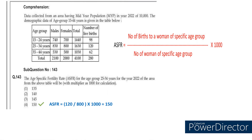Coming to the third question, they are asking us to calculate the ASFR, age-specific fertility rate. Both in the numerator and denominator, we need to look for the specific age group. In this question, the age group is 25 to 34. The formula is: in the numerator, number of births to a woman of specific age group 25 to 34 — from the table, that is 120 live births — divided by number of women of specific age group 25 to 34, which is 800 females. So 120 divided by 800 multiplied by 1000. The answer is 150.